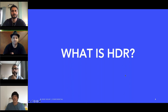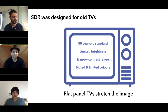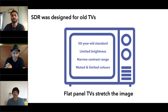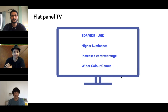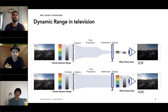Before we start, let's have a short introduction to HDR. Today's standard dynamic range technology is focused on a very old standard that delivers limited brightness and a very narrow contrast, as well as muted and limited colors as defined by Rec. 709. Watching this content on today's flat panels would just stretch the image and distort the creative intent. New panels can show HDR content — they can display higher luminance values, increased contrast range, and a wider color gamut.